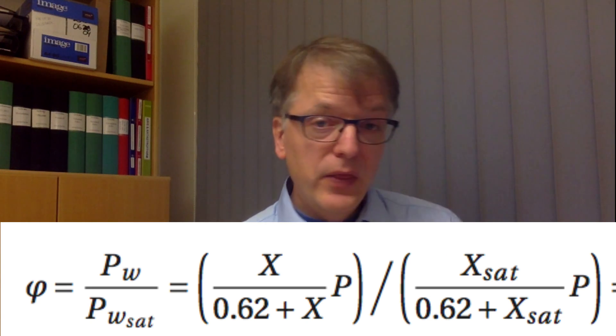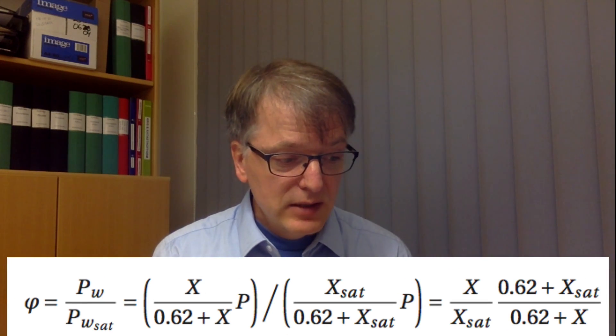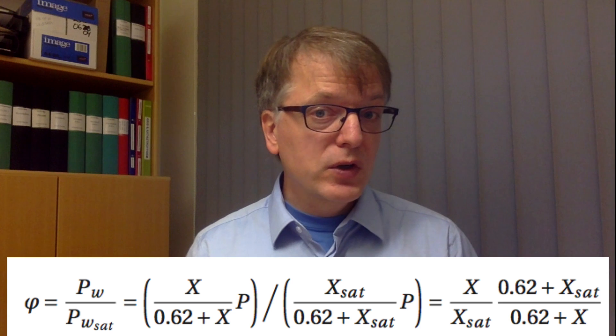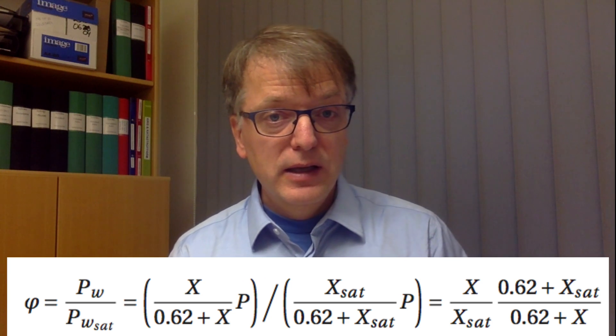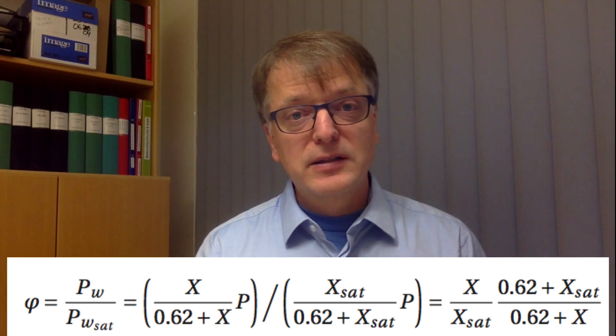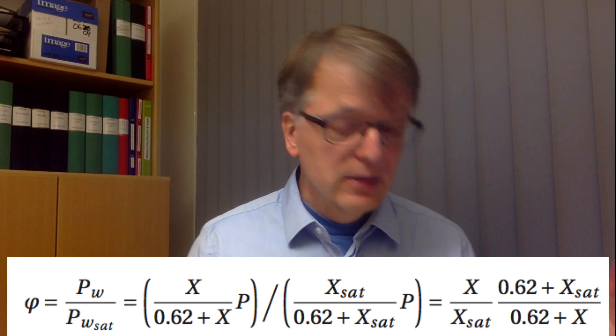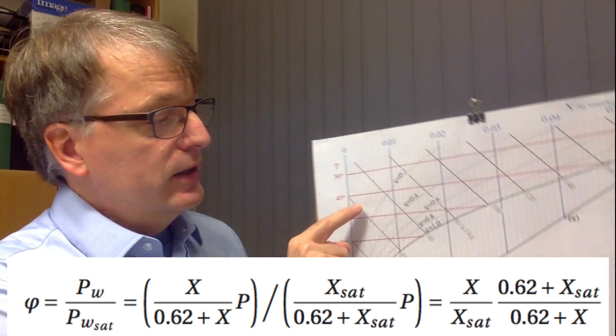So let's look at the equation. The relative humidity is the partial pressure of water divided by the vapor pressure at that point, but we can express both in terms of water content and then you get this. Then we can rearrange a bit and we get to this equation where you can actually see that if the water content is a lot less than 0.62, and if the water content at the saturation point is a lot less than 0.62, then we can simply take that away.